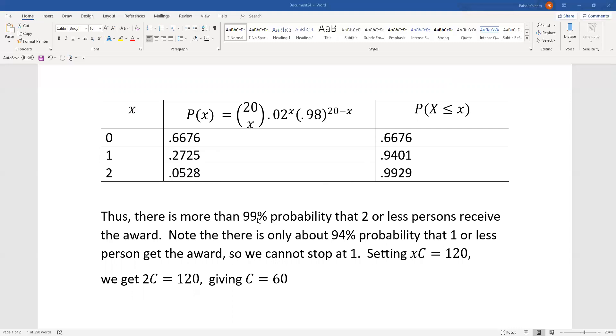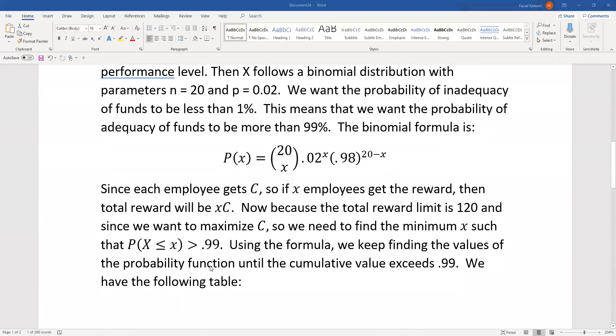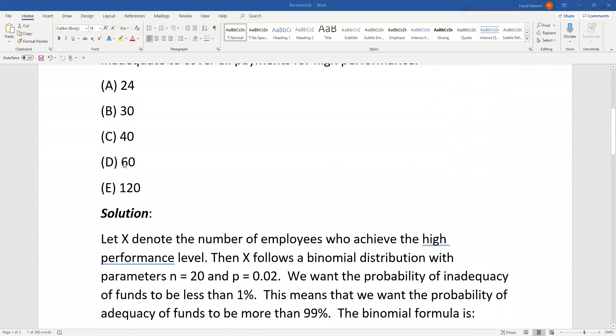Note that we cannot stop at one because at that point there is only about 94% probability that one or less person will get the reward, and we're looking for greater than 99%. So setting X equals 2, we've determined that the minimum X that we can have under these conditions is 2. So 2C equals 120, that gives C equals 60, and that is choice D.